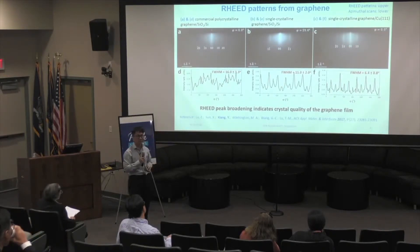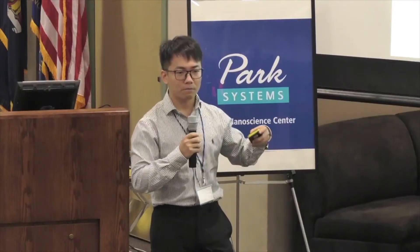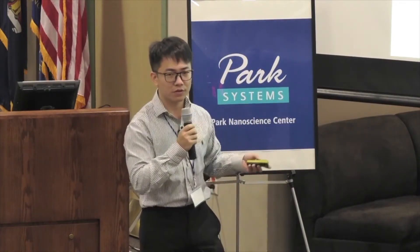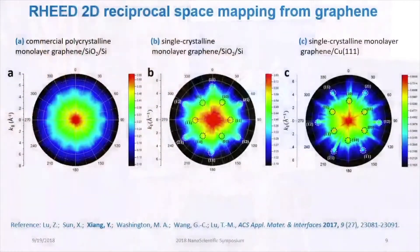But we still have not answered the question of how to distinguish which one is single crystalline and which one is polycrystalline. In order to do that, we take one step further and construct the two-dimensional reciprocal space mapping for those three samples. A two-dimensional reciprocal space mapping is basically a horizontal slice of the reciprocal space.